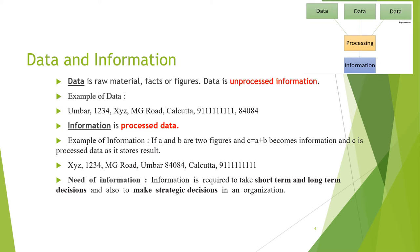So C is your processed data, and since it stores the result, it is information. As shown in the diagram, data is processed to form information — that's why information is called processed data and data is called unprocessed information. Information is required to take short-term, long-term, and strategic decisions in an organization. When team members discuss and generate a decision together, that is information. Information is used to take different types of decisions.